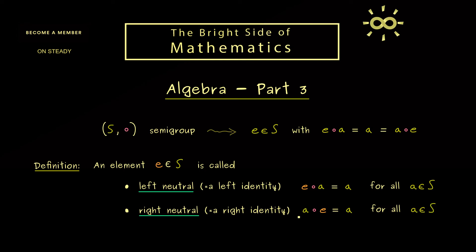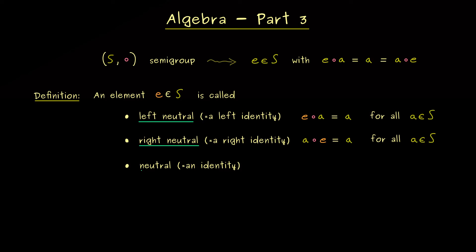And now obviously as mentioned above we can put both notions together. And then we simply say E is neutral or an identity. So this means at the same time it's a left identity and a right identity. So obviously this is the most important notion here but we don't have it all the time. Indeed sometimes it might be already good enough to just have a left neutral element.